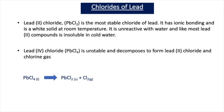Now let's turn our attention to the chlorides of lead. Lead forms two different chlorides: PbCl2, lead 2 chloride, and PbCl4, lead 4 chloride. Lead 2 chloride is the most stable chloride of lead — it has ionic bonding and is a white solid at room temperature. It's unreactive with water, and like most lead 2 compounds, it's insoluble in cold water, although it does dissolve in hot water.